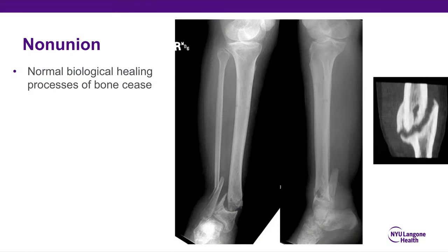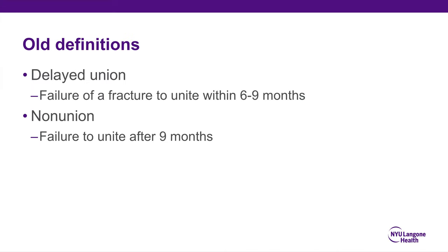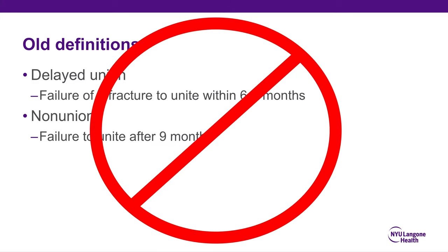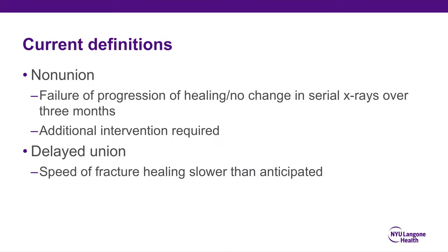A non-union is when the normal biological healing process of the bone fails. It used to be defined along a timeline where failure to unite within six to nine months was considered a delayed union, and failure to unite after nine months was a non-union. This is no longer the acceptable definition. The current definition is failure of progression of healing with no change in serial x-rays over three months, or some additional intervention is required for healing. A delayed union is when the speed of fracture healing is slower than anticipated.